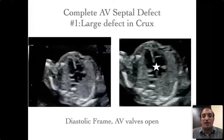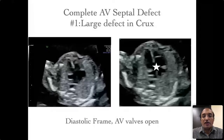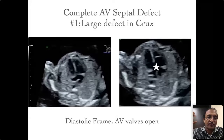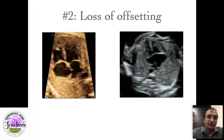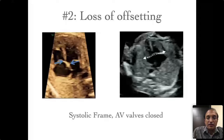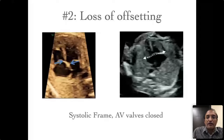The second feature: normally when the valves are closed there is a phenomenon called offsetting, where the tricuspid valve is at a lower level compared to the mitral valve. In AV septal defect there is a linear insertion of the atrioventricular valves and complete loss of offsetting.